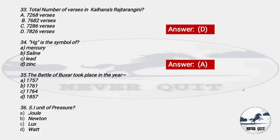Question 34: Battle of Buxar took place in the year — Options: A) 1757, B) 1761, C) 1764, D) 1857. The right answer is option C — 1764.